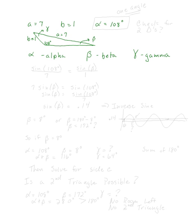Now we're given the ambiguous case here. What tells me that it's the ambiguous case is that I'm given only one angle and two sides — one angle and two sides. We'll see why this is called the ambiguous case in a second.